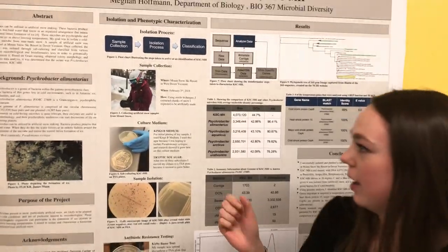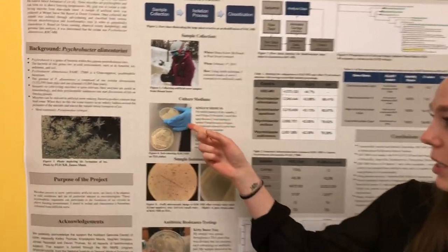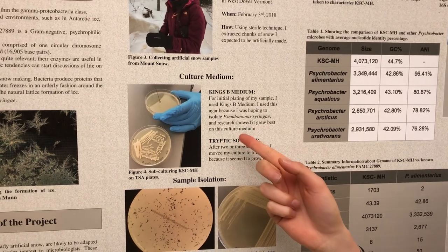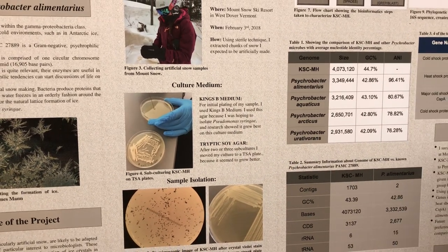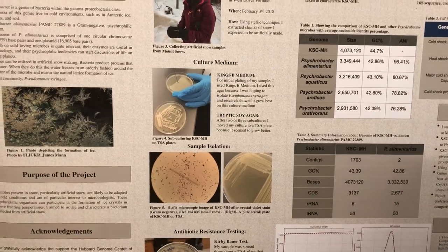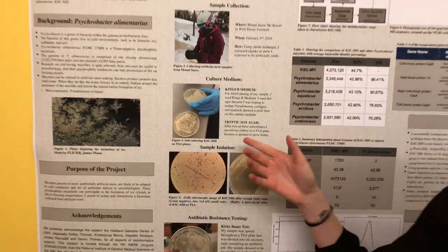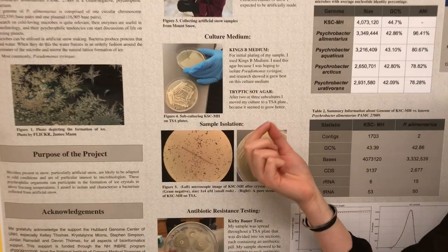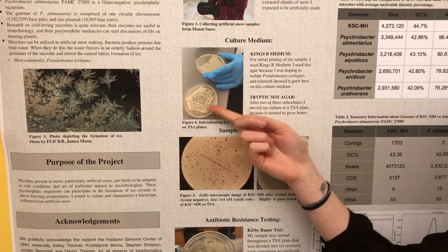From there I streaked it on a Kingsbury medium plate, and then I switched to a TSA plate because it grew just as well. I then obtained a pure culture by streaking specific distinct colonies.